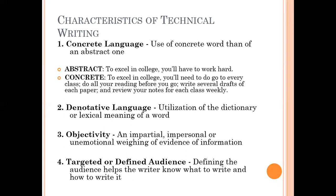Number two is denotative language, which is dictionary language—utilization of the dictionary or lexical meaning of a word. Number three is objectivity, which is an impartial, impersonal, unemotional weighing of evidence or information. Number four is targeted or defined audience—defining the audience helps the writer know what to write and how to write it.